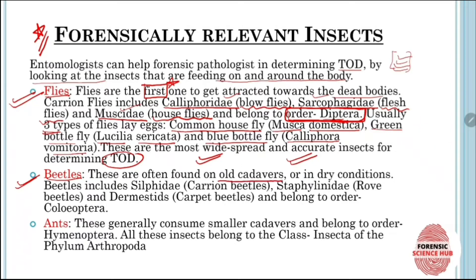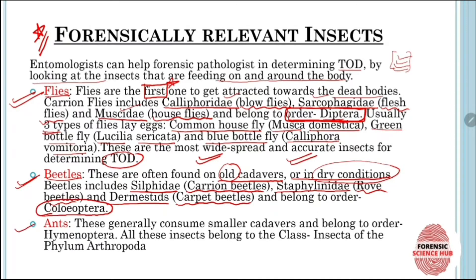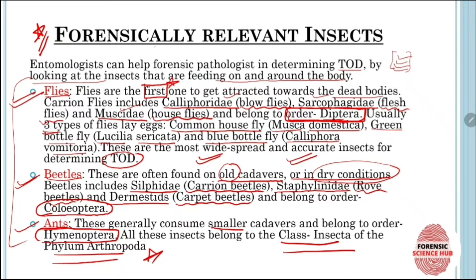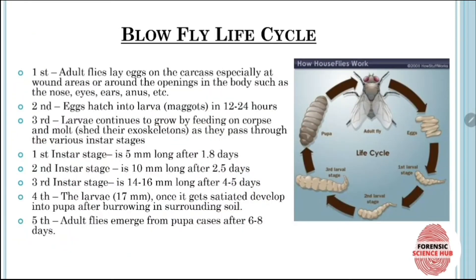Beetles are often found on old cadavers or in dry conditions. They include Silphidae (carrion beetles), Staphylinidae (rove beetles), and Dermestidae (carpet beetles), belonging to the order Coleoptera. Ants generally consume smaller cadavers and belong to the order Hymenoptera. All these insects belong to the class Insecta of the phylum Arthropoda.